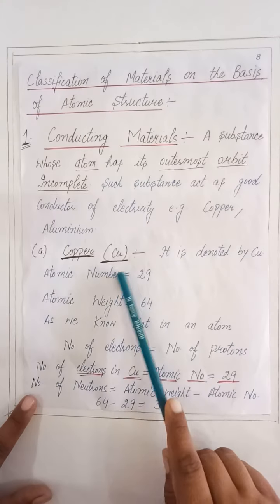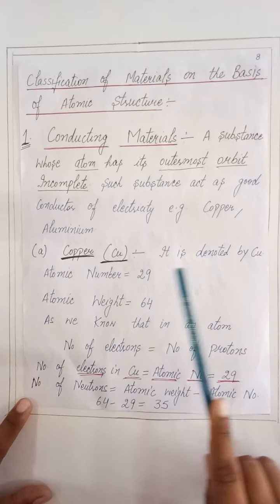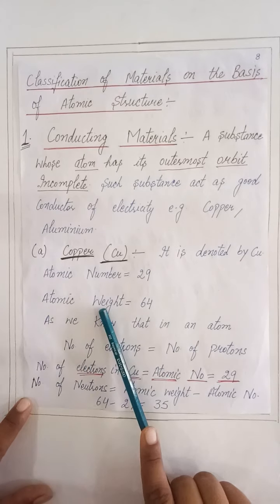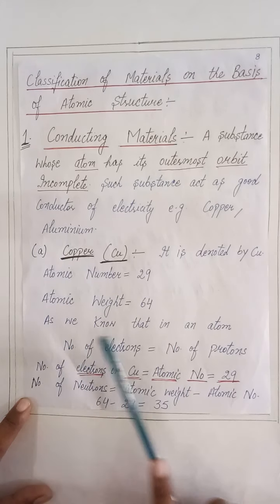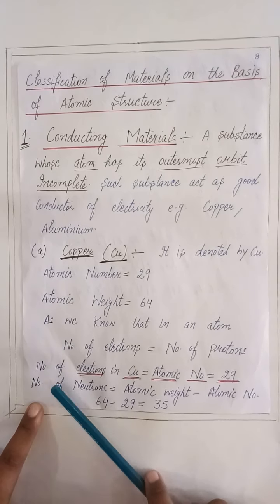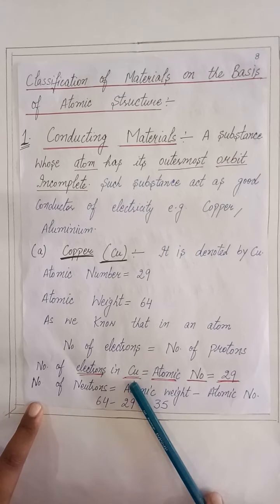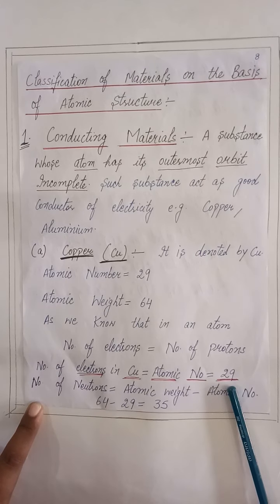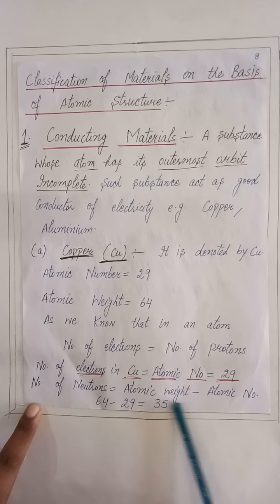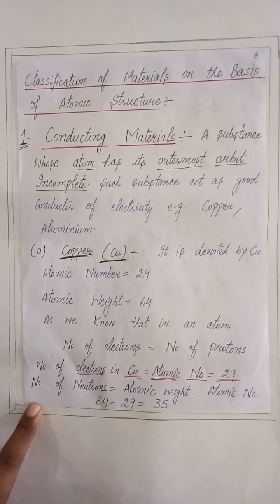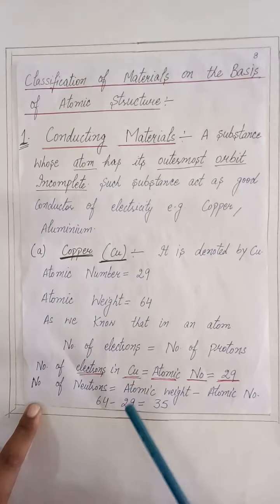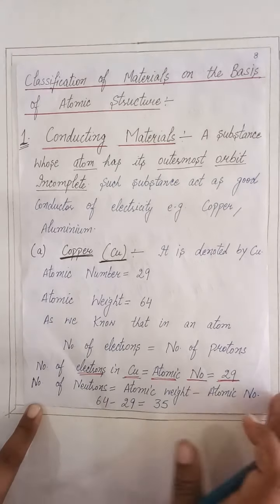We will take an example of copper's atomic structure. It is denoted by Cu, atomic number is 29, atomic weight is 64. The number of electrons in copper equals the atomic number, which is 29. Number of neutrons equals atomic weight minus atomic number: 64 minus 29, so number of neutrons equals 35.